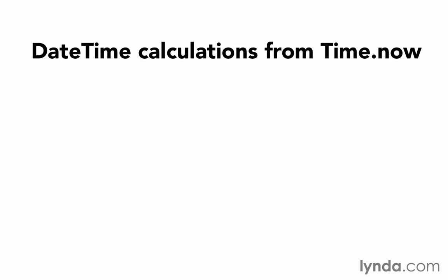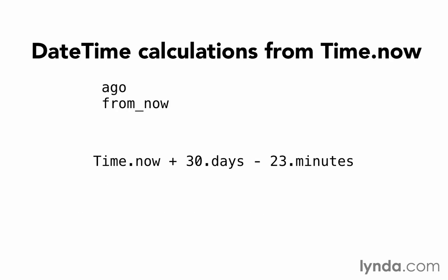We can also do calculations from time.now directly. Ago and from_now do that. So if we have time.now plus 30.days minus 23.minutes, that's the same thing as if we said 30.days.from_now minus 23.minutes. Time.now plus 30.days is the same as 30.days.from_now. And ago works the same way, just using subtraction.